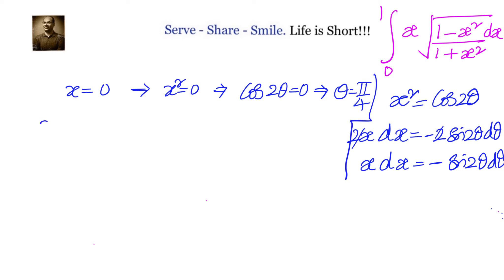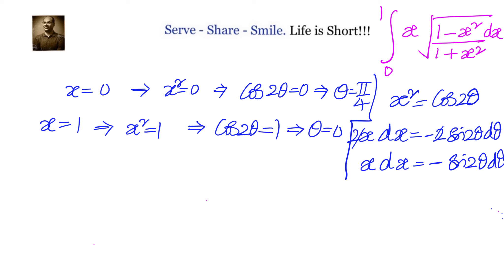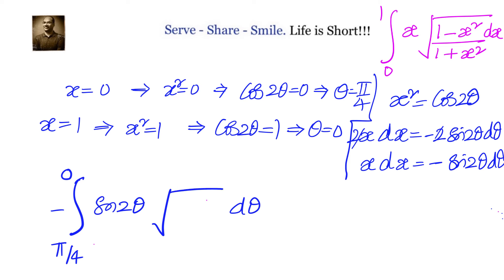For the upper boundary, when x equals 1, x squared equals 1, so cos 2θ equals 1, which is cos 0, giving 2θ equals 0 and θ equals 0. So the integral limits change from 0→1 in x to π/4→0 in θ. Substituting, x dx becomes minus sin 2θ dθ, and we have the square root of (1 minus cos 2θ) divided by the square root of (1 plus cos 2θ).